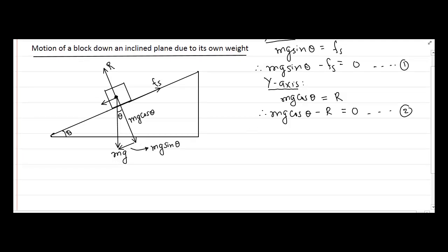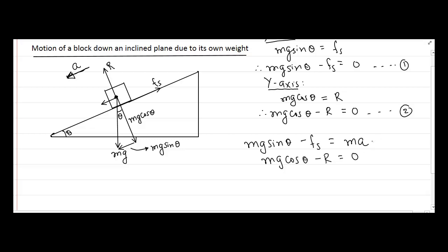Now let's say the block starts sliding down the inclined plane in this direction with an acceleration A. If the block is moving downwards, equilibrium of forces will be disturbed and the equation we get is Mg sin theta minus Fk equals MA. In the earlier case the block was stationary so these two forces cancelled each other out. As far as the y-axis is concerned there is no change, since the block is not moving along the y-axis at all. So the equation still remains Mg cos theta minus R equals 0, which we call equation 3.